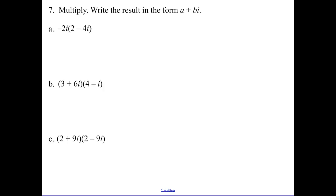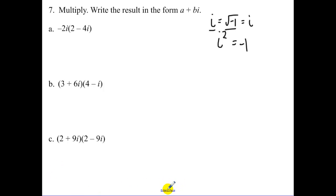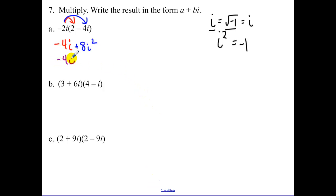Now multiplying out — you'll need those tricks. Remember i = √(−1), and i² = −1. Multiplying: distribute the negative 2i in. You get negative 4i. Then distributing negative 2i gives plus 8i². Now i² changes to negative 1, so that becomes negative 4i plus 8 × (−1). Writing in a + bi form: the negative 8 comes first as our real portion, then minus 4i.